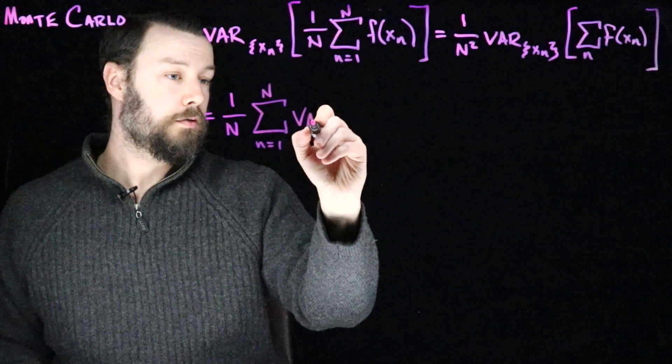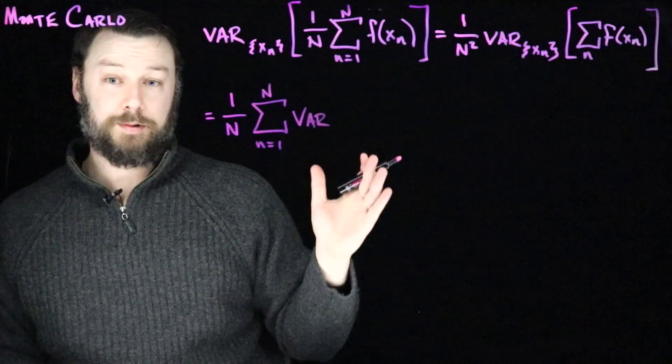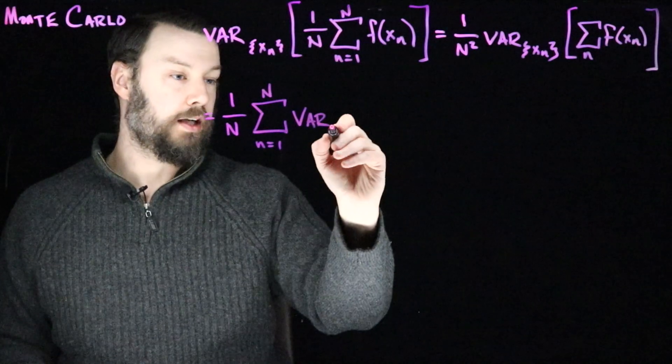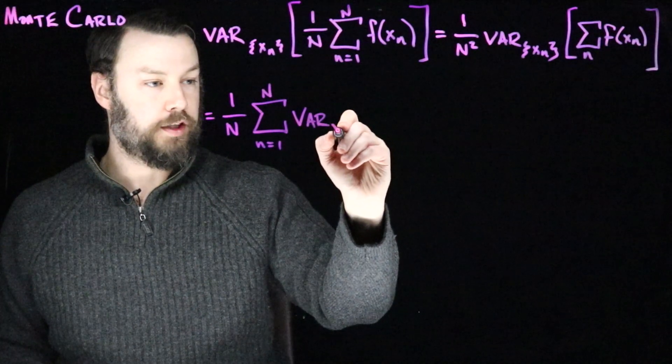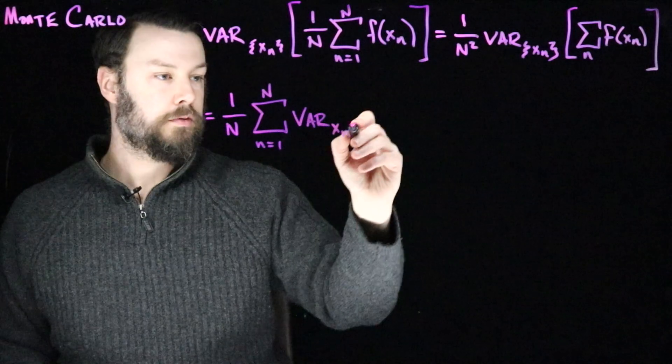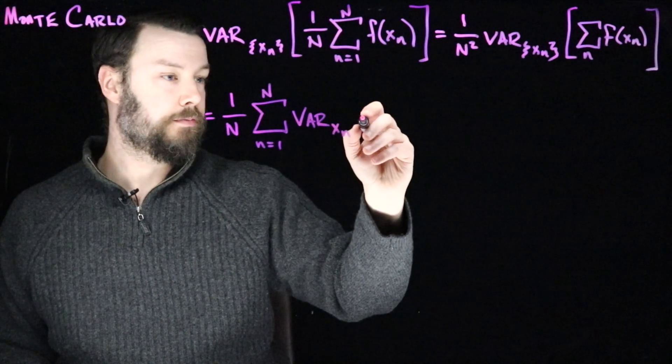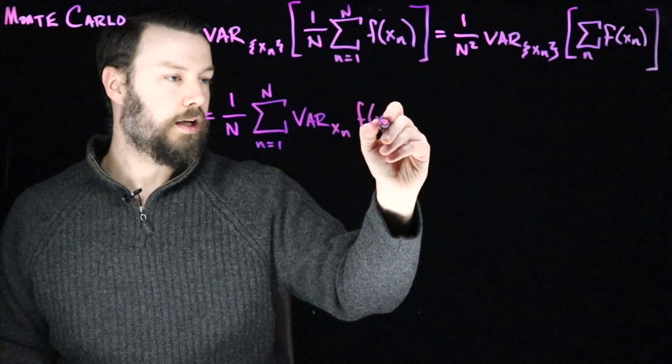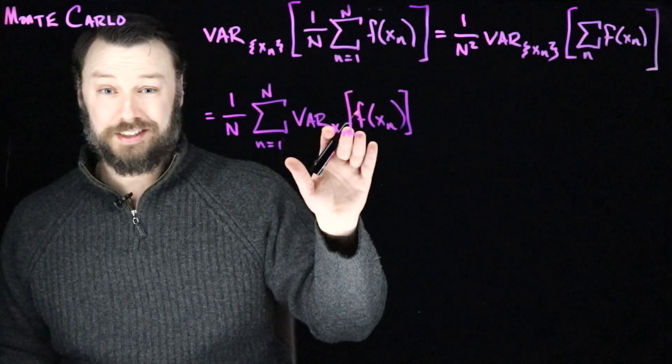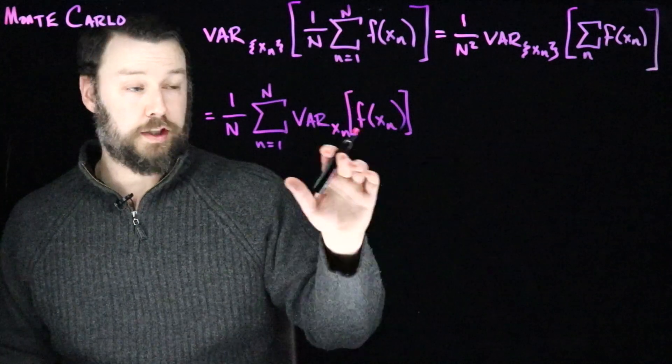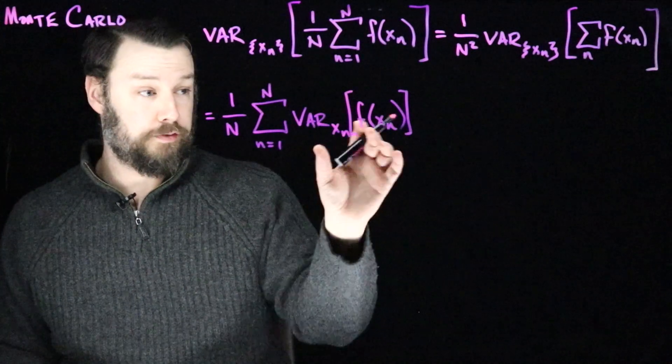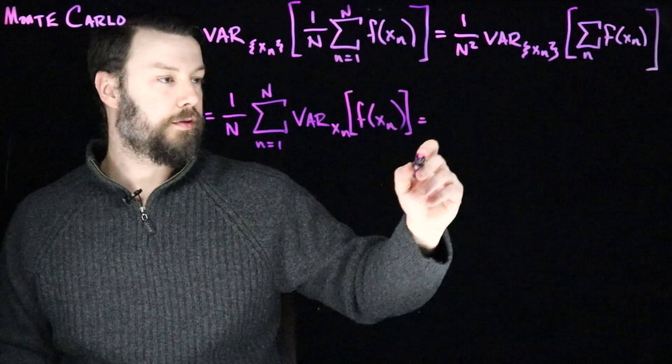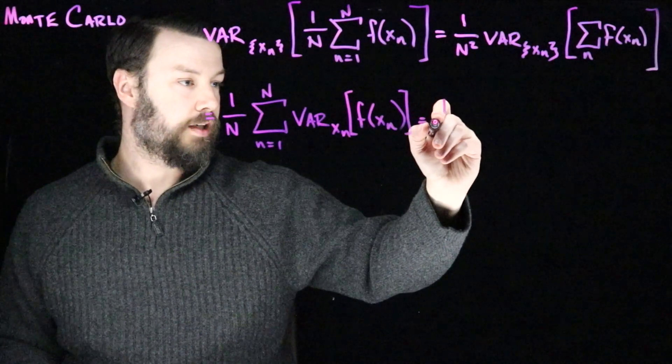We can write this out as 1 over n squared of the sum of each of their variances. Now by the same kind of argument we had before, there's only one xn that's appearing inside, and so I can focus on just the variance of that xn, the variance with respect to that xn, of this guy, f of xn. There's nothing special about xn relative to the other x's. This variance is the same over all of the individual samples. This is kind of the one sample variance.